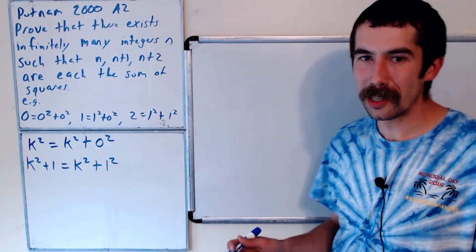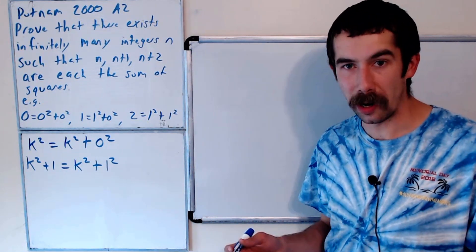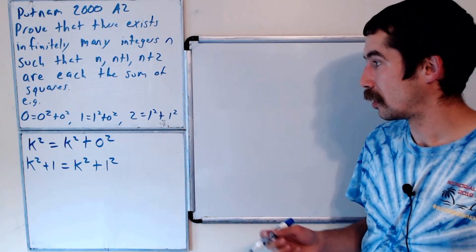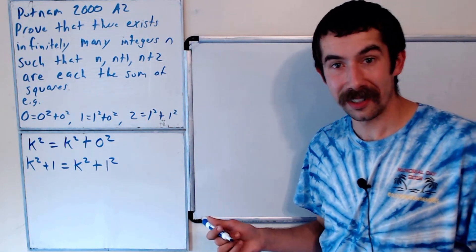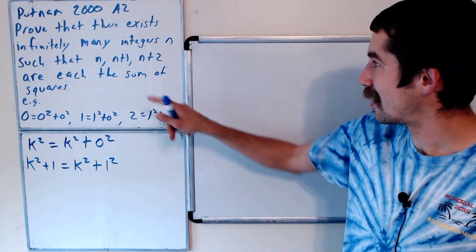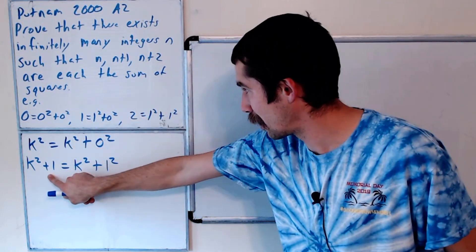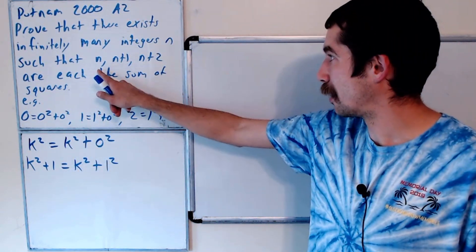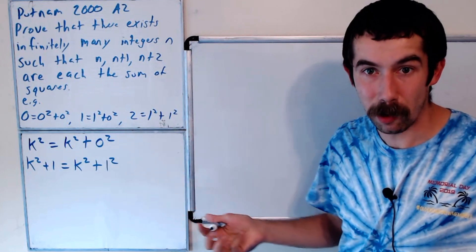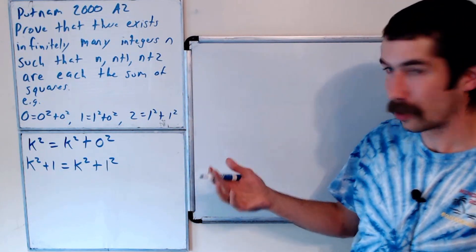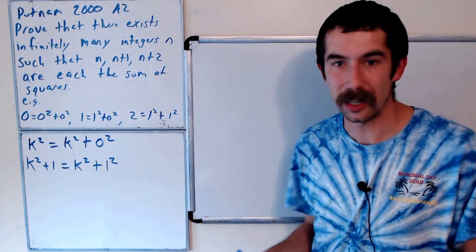And so what we want to do is find when is k squared minus 1 the sum of two squares. And if that's the case, then we'll say n plus 1 is equal to k squared, n plus 2 is equal to k squared plus 1, and then n would be k squared minus 1. So that would be our solution. We'll show that there's infinitely many solutions that do that.